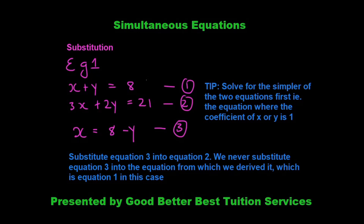What do I mean by that? Look at equation 1 — the coefficient of x is 1 and the coefficient of y is 1. In equation 2, the coefficient is 3 for x and 2 for y. So we derive a third equation from equation 1, taking y to the right-hand side: x is equal to 8 minus y. This becomes our third equation.